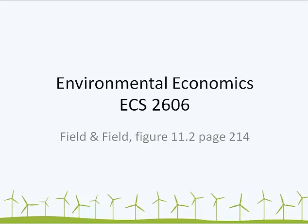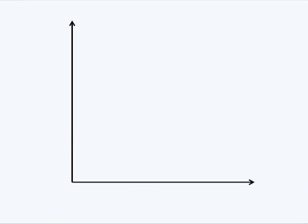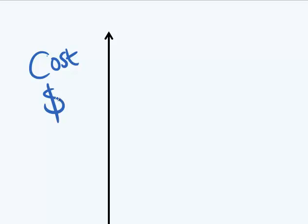We are looking at figure 11.2 on page 214 of your textbook. First of all, what you have to see is that in this situation, in this graph, we have a situation where we have two different marginal damage curves. Now let's draw these curves quickly. On the vertical axis I'm going to write cost and also give me a dollar sign if you like.